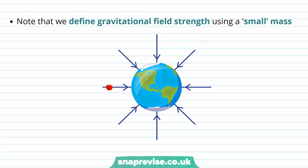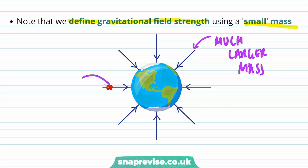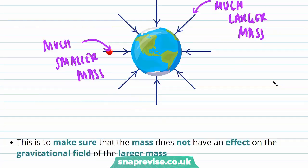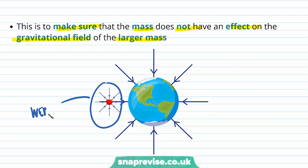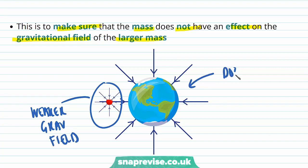It's important to note that we define gravitational field strength using a small mass. So in order to define the gravitational field strength for a much larger mass such as the Earth, we have to use a mass that is much smaller than the Earth. This is to make sure that the mass does not have an effect on the gravitational field of the larger mass, because every object has its own gravitational field, and unless the gravitational field of the small object is very weak, it might have an effect on the gravitational field of the larger object, which is what we want to investigate.